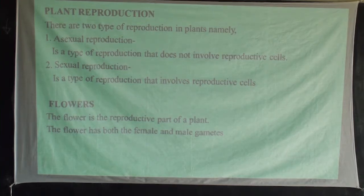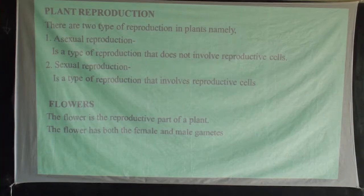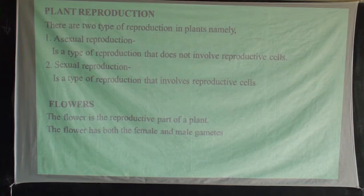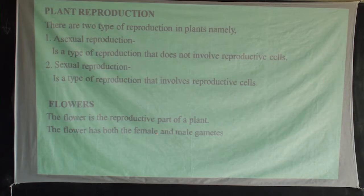A flower is a reproductive part of a plant — the part of a plant that is used to reproduce, to give rise to new plants. We need to have the flowers. Simply, a flower is a reproductive part of a plant, the part that is majorly used in reproduction.